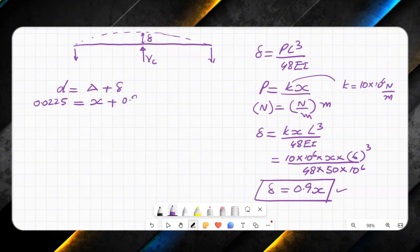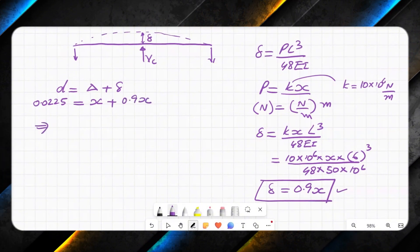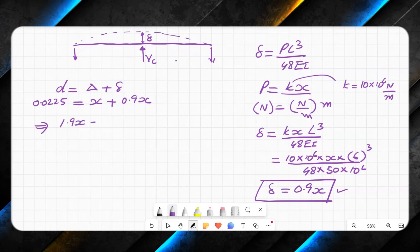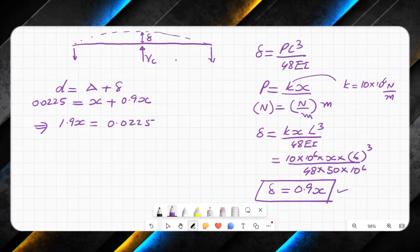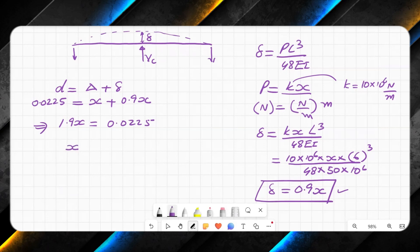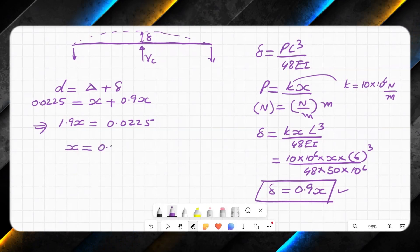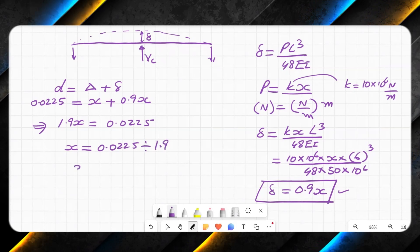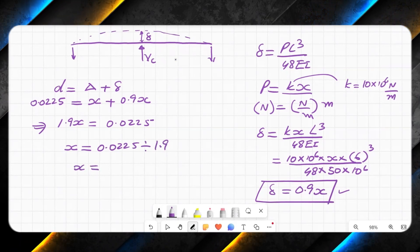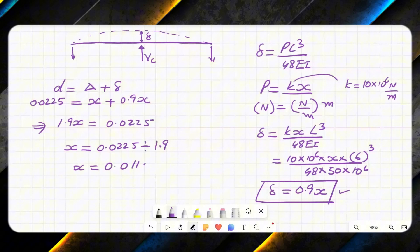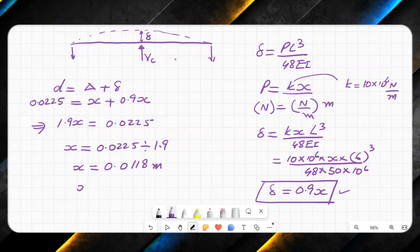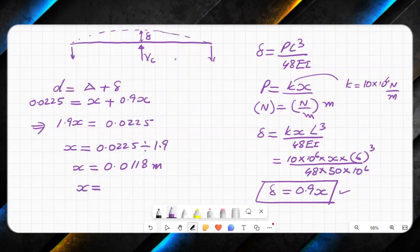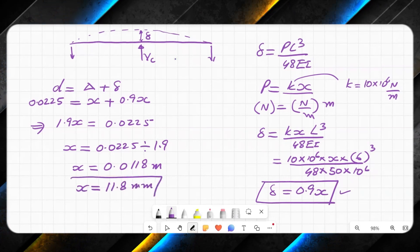So D equals delta plus small delta. This is 0.0225 and this is x plus 0.9x. This will give me 1.9x equals 0.0225, and from here I can get value of x as 0.0225 divided by 1.9. This will give me value of x as 0.0118 meters, or x equals 11.8 millimeters.